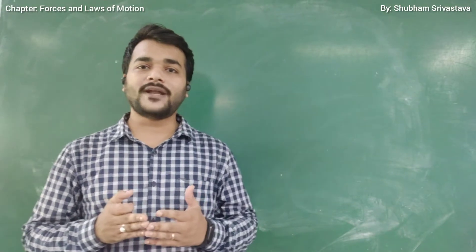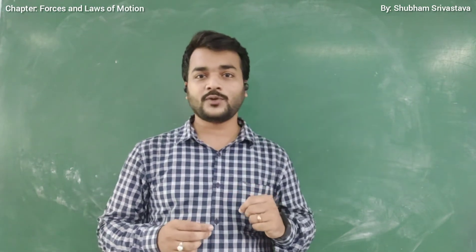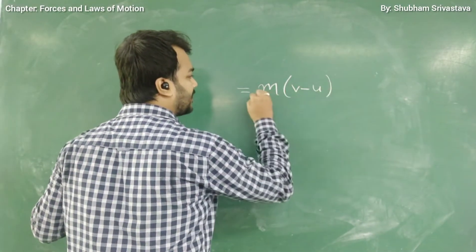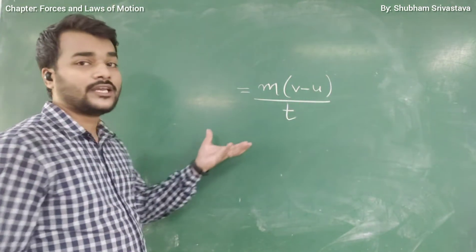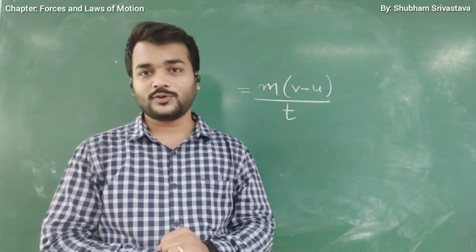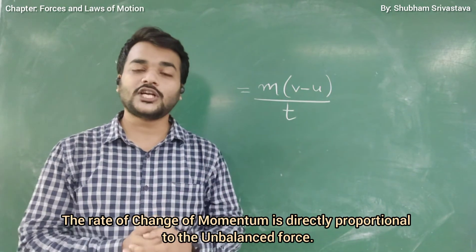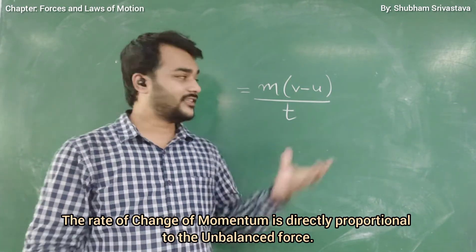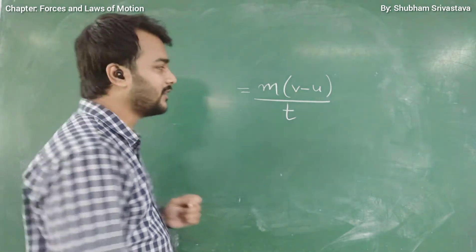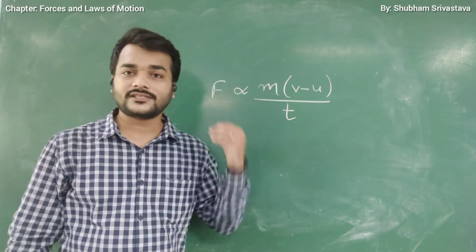Now, if momentum is the product of mass and velocity, let's understand the rate of change of momentum. The rate of change of momentum will be m × (v − u) / t. Newton's second law of motion states that the rate of change of momentum is directly proportional to the unbalanced force on the body. Using the sign of proportionality, force is directly proportional to the rate of change of momentum.